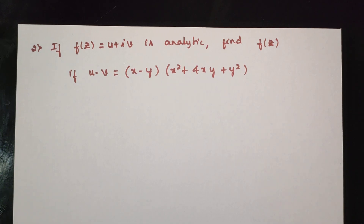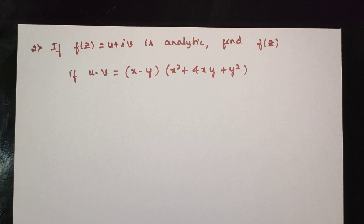The next question: if f of z is equal to u plus iv is analytic, find f of z if u minus v is equal to (x minus y) times (x squared plus 4xy plus y squared).